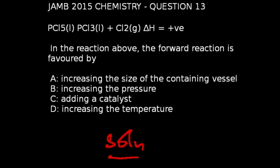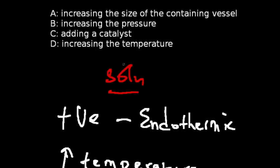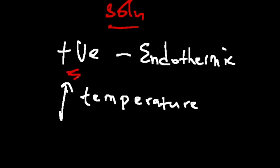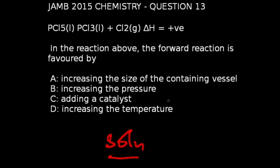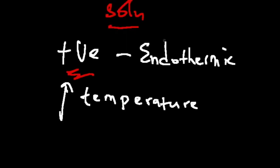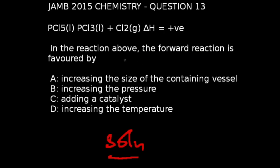Question number 13 of JAM 2015 chemistry exams: In the reaction above, the reaction is favored by — the positive ΔH sign tells us this is an endothermic reaction, meaning heat is absorbed from the environment. For such a reaction, the forward reaction can only be favored by increasing the temperature. The correct answer is option D, which is increasing the temperature.